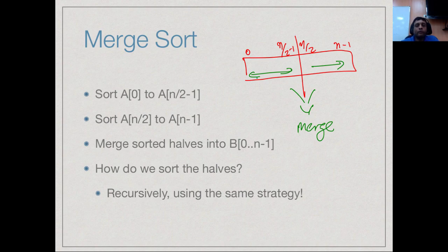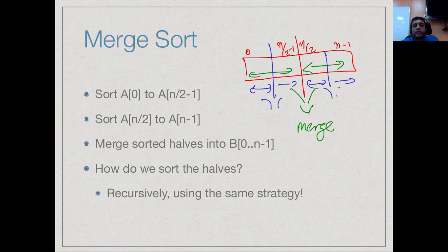We have said we will break the problem into two sub-problems — but how do we solve each one? We recursively do the same thing: break each sub-problem into two further sub-problems and merge. We keep breaking up until we reach a trivial sub-problem, which is an array of size 1.